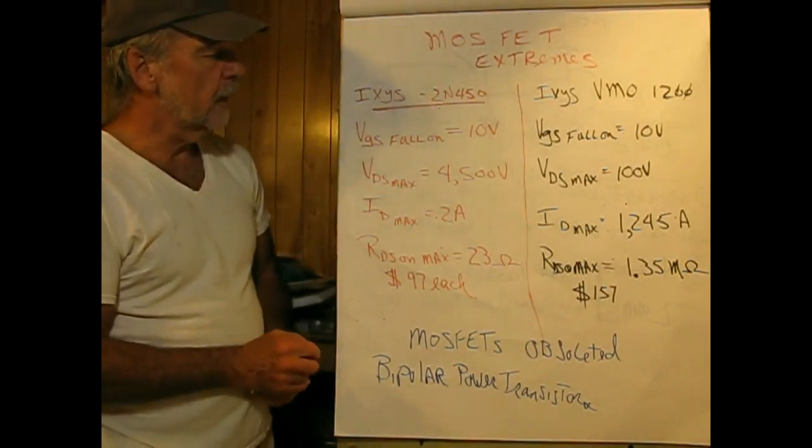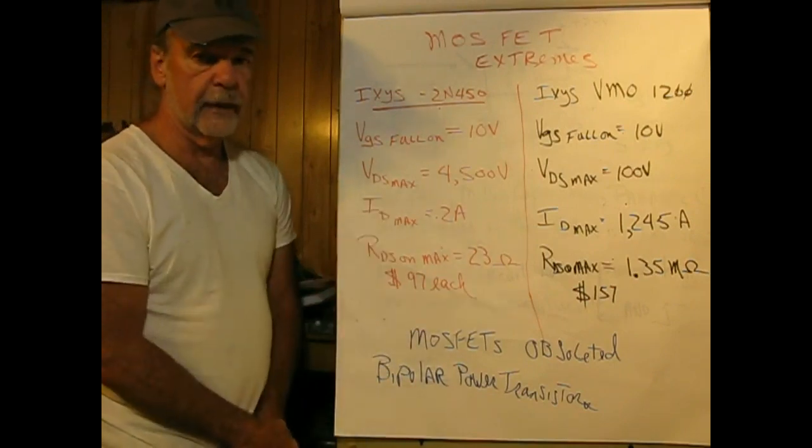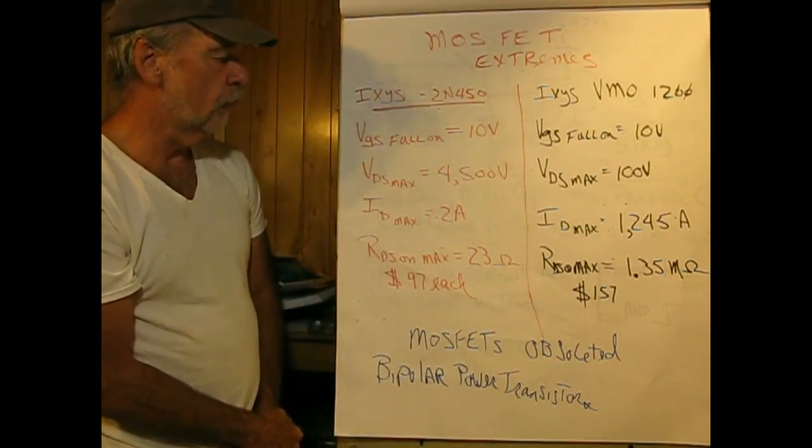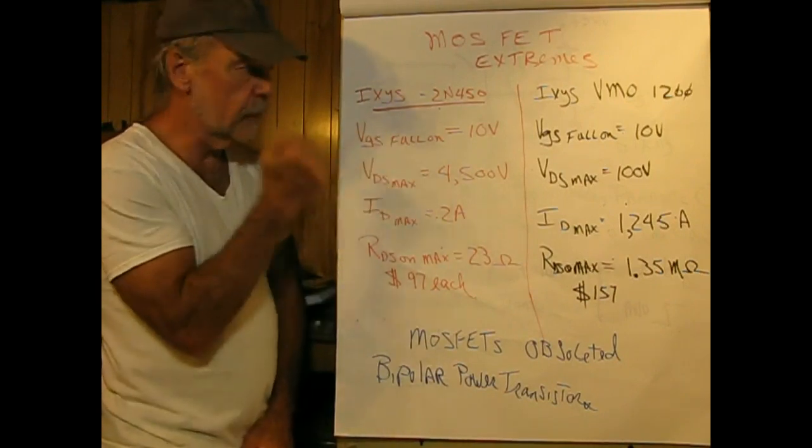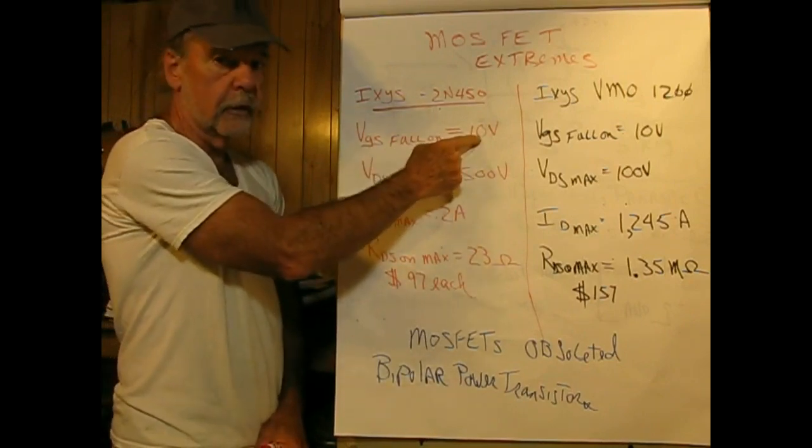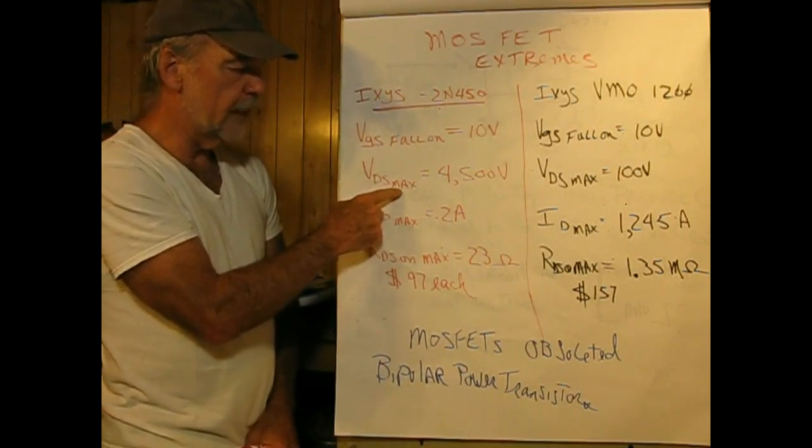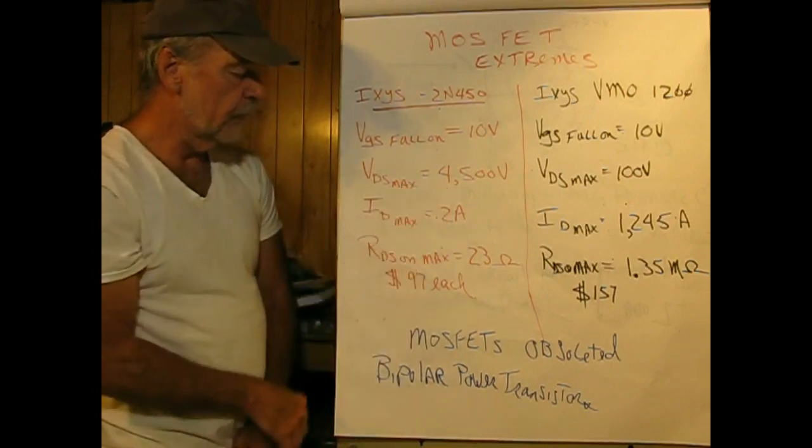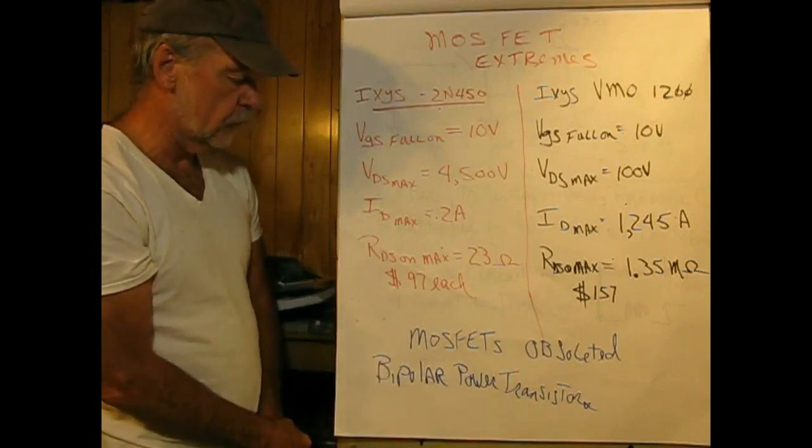I got on the Internet and searched for the highest voltage MOSFET I could find, made by a manufacturer named Dioxus, part number 2N450. This is an N-channel device where VGS is equal to 10 volts full-on, guaranteed. VDS max is a whopping 4,500 volts. ID max equals 2 amperes, so that's an awful lot of power to switch.